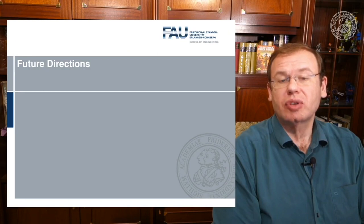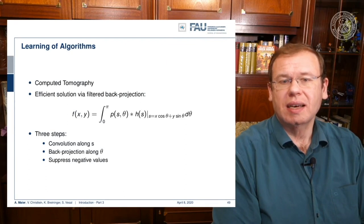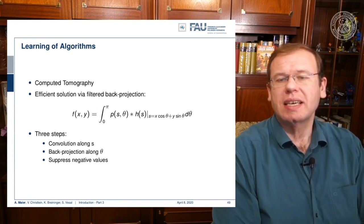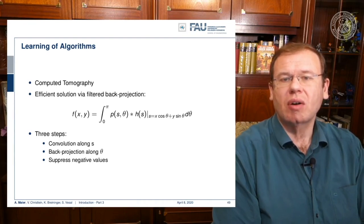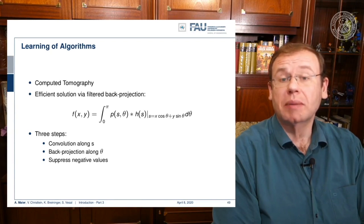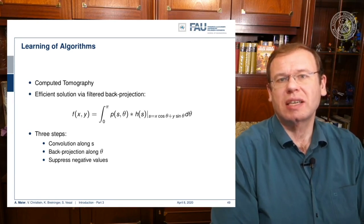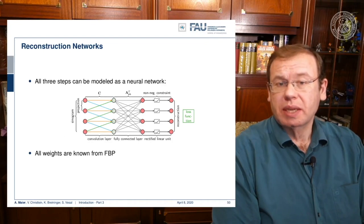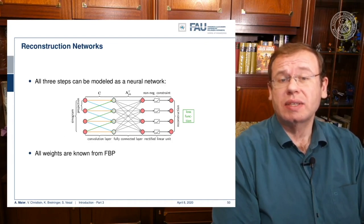So let's look at some future directions. Something we like to do here is learning algorithms. For example, you can look at classical computed tomography, which is expressed in the filtered back projection formula. You have a filter along the projection direction, and then a summation over the angle in order to produce the final image. This is a convolution and a back projection that can be expressed in terms of linear operators — essentially matrix multiplications. Those matrix multiplications can be implemented as a neural network, giving you an algorithm or network design that can be trained for specific purposes.